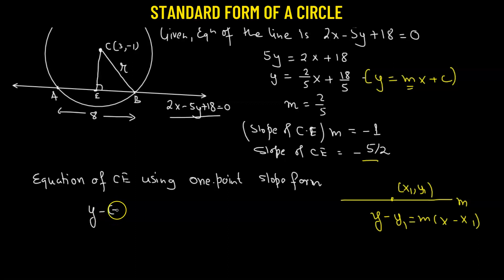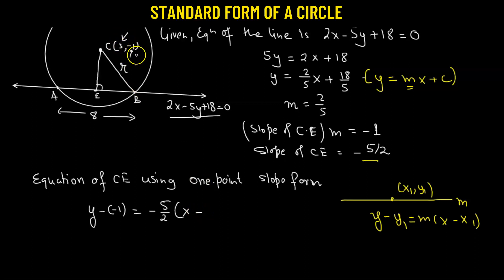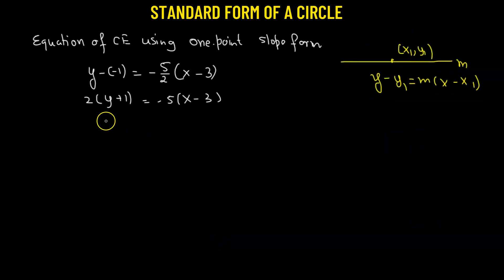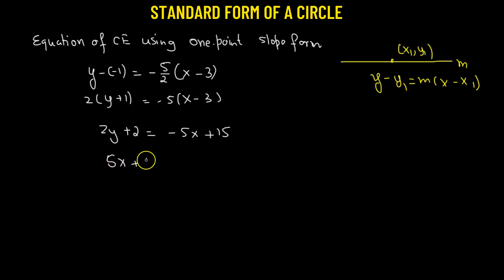Applying the formula, y minus (-1) equals (-5/2) times (x minus 3). Multiplying both sides by 2 gives 2(y plus 1) equals -5(x minus 3), which expands to 2y plus 2 equals -5x plus 15. Rearranging, we get 5x plus 2y equals 13. This is the equation of line CE.